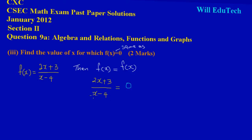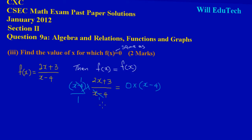So now basically we could just go ahead and quickly transpose. If you notice, x minus 4 is dividing my left hand side. So to transpose and find the value of x, we have to multiply both sides by x minus 4, which is the opposite of division. So x minus 4 into itself cancels out, and we are left with 2x plus 3 equal to 0 times x minus 4, and we know that 0 times anything equals 0.